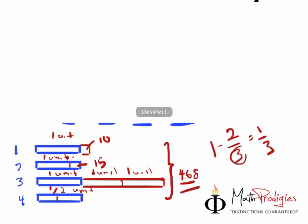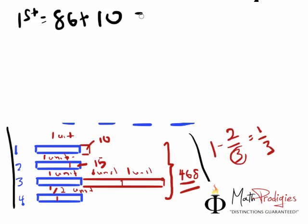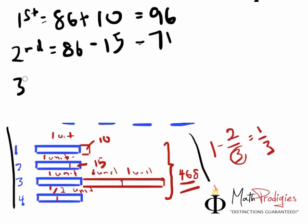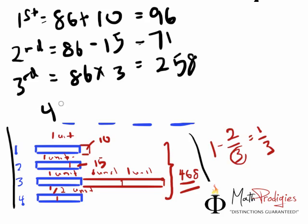Now what you got to do is very simple. For you to find out the numbers, all you got to do is look at this thing again. So now you know that 1 unit equals to 86. So for the first number, it's actually equals to 1 unit, which is equals to 86 plus 10, and hence you get 96. The second unit is actually 1 unit minus 15, which is 86 minus 15, which you will get 71. The third unit is actually equals to 3 units, which is 86 times 3, and you will find out that the answer is 258. And lastly, the fourth number is equals to half a unit, which is 86 divided by 2, which is actually 43. And that is how you find the answers.